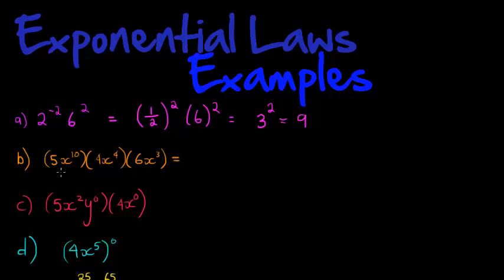Now let's look at the next one. Here we simply multiply the coefficients: 5 times 4 is 20, times 6 is 120. Then the bases are all the same — x, x, x — so we just add up the exponents: 10 plus 4 plus 3 equals 17. Answer: 120x to the power of 17.